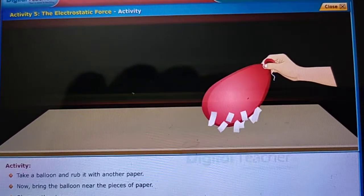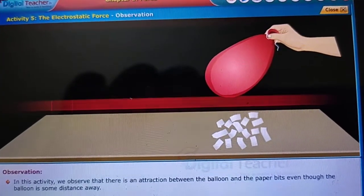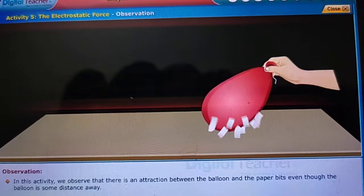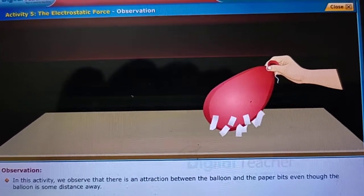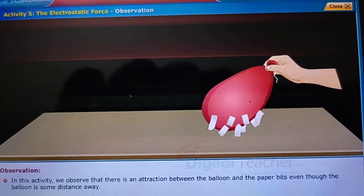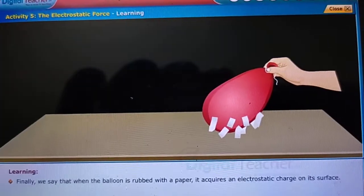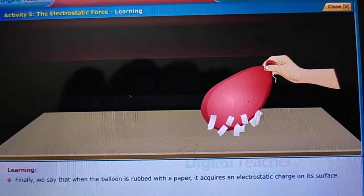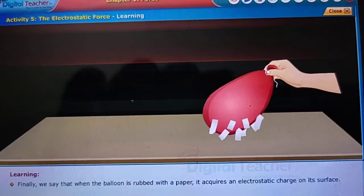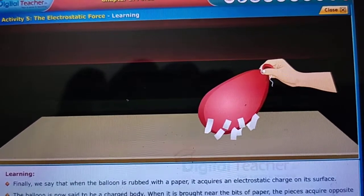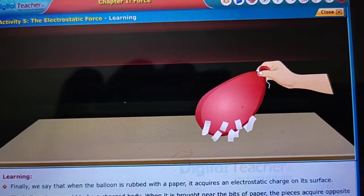In this activity we observe that there is an attraction between the balloon and the paper bits even though the balloon is some distance away. Finally, we say that when the balloon is rubbed with paper, it acquires an electrostatic charge on its surface.